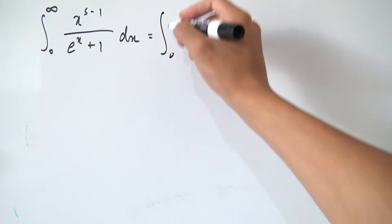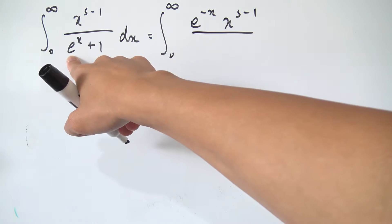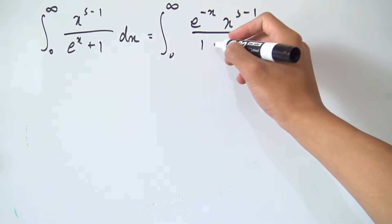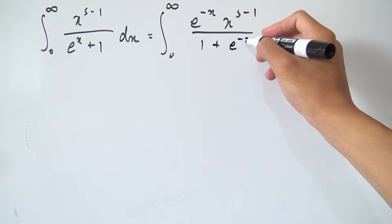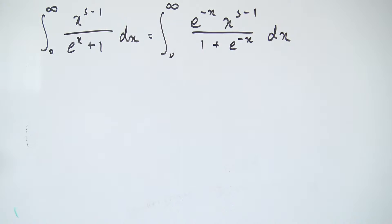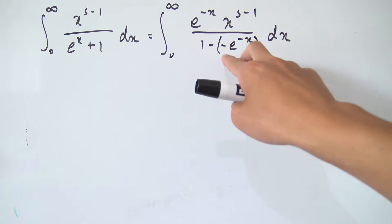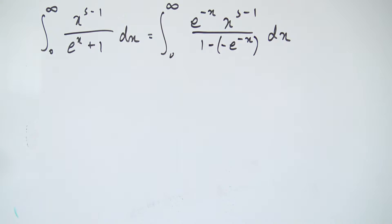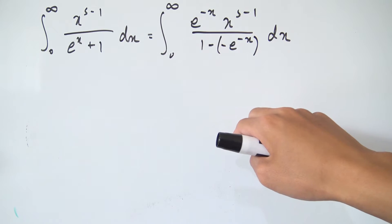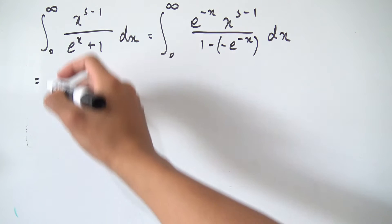We're going to use pretty much the exact same method to evaluate this. Just like last time, we're going to multiply top and bottom by e to the minus x, giving us e to the minus x times x to the s minus 1 in the numerator, and 1 plus e to the minus x in the denominator. We want to turn this denominator into a geometric series, which requires the form 1 over 1 minus something.